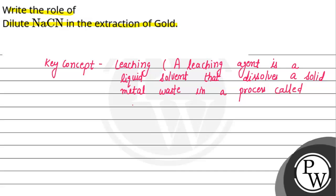Leaching क्या होती है — हमारे पास leaching agent जो कि कोई liquid solvent होता है, वो solid जो metal का waste है उसको dissolve कर देता है। That process is called leaching. अब हमसे question में पूछा गया है कि dilute sodium cyanide, gold की extraction में क्या role play करता है।